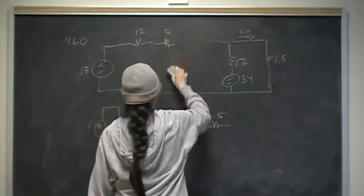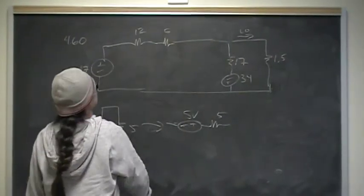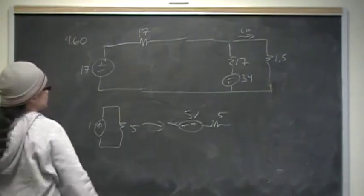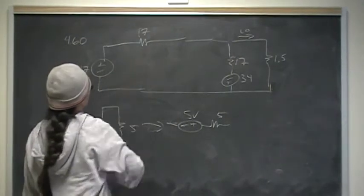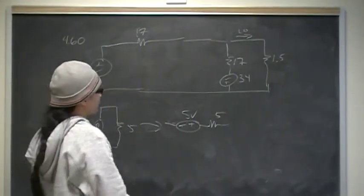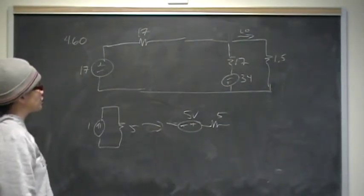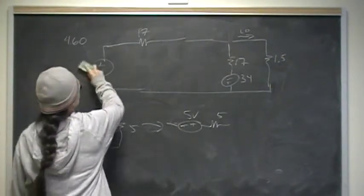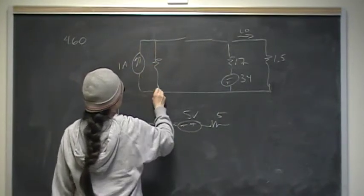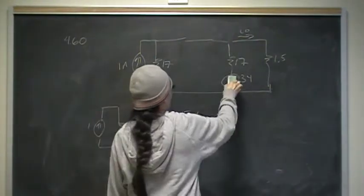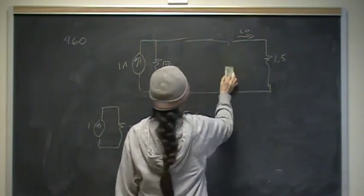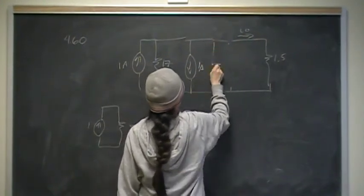That 5-ohm term goes away, and the series-connected resistors just add, so the total resistance becomes 17 ohms. Now I have two voltage sources connected in series with resistors, and I want to find a current, so I'll do source transformations on both. The first gives V/R = 17/17 = 1 amp in parallel with 17 ohms. The second gives 34/17 = 2 amps in parallel with 17 ohms, with the current flowing in the opposite direction.